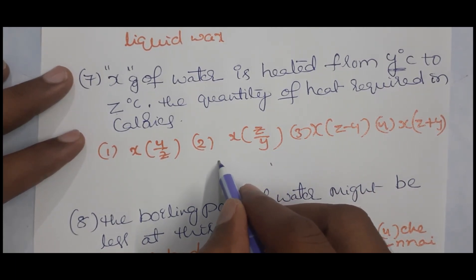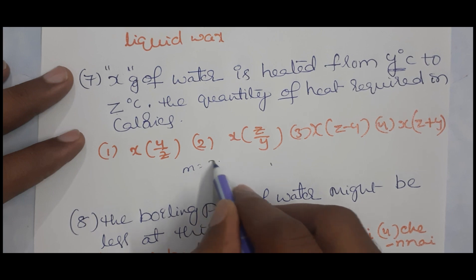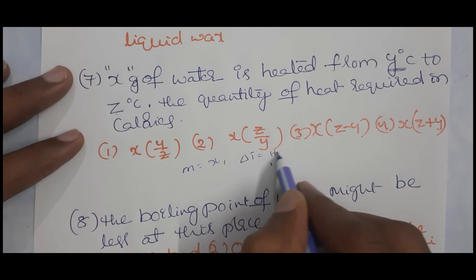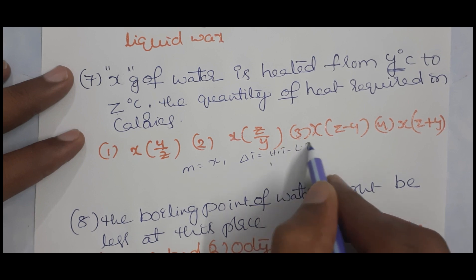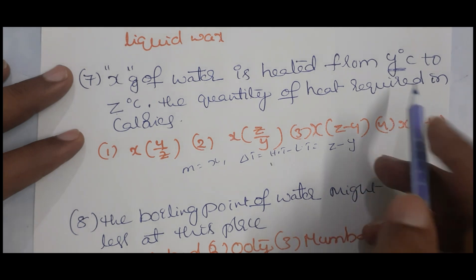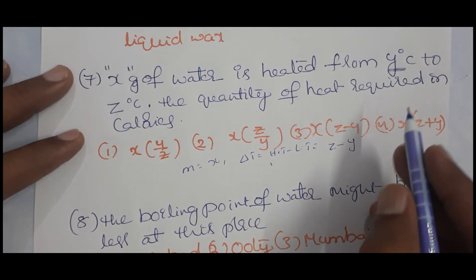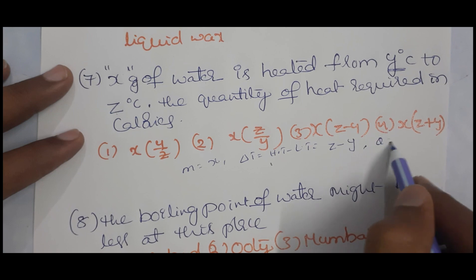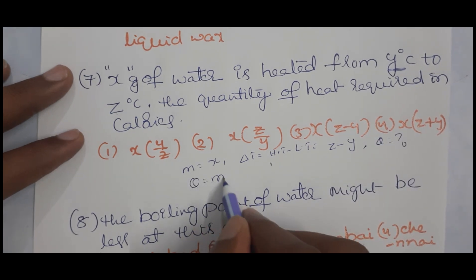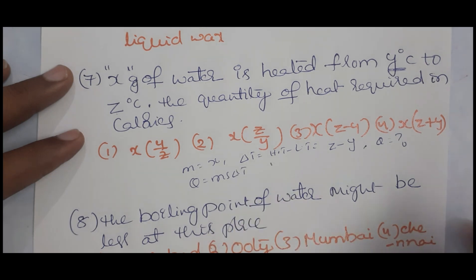Mass M is X grams and delta T is the higher temperature minus lower temperature. Higher temperature is Z and lower temperature is Y, because temperature increases from Y to Z. Heat Q is given by the formula Q = M × S × ΔT.